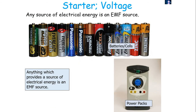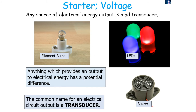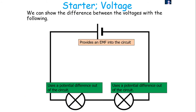Any source of electrical energy is an EMF source — a battery, a cell, a power pack. Any electrical output is what we call a potential difference transducer. A filament bulb, a buzzer, an LED are all examples of things which use a potential difference in a circuit. In a circuit diagram, the cell provides EMF into the circuit, whilst the bulbs use a potential difference out of the circuit.